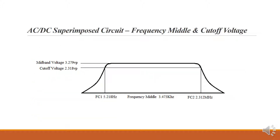Here's our calculated Bode plot. We can see FC1, our low cutoff frequency at 5.218 Hz; F middle at 3.473 kilohertz in the center of our mid band; and our high frequency cutoff FC2 at 2.312 megahertz. At mid band frequencies we have 3.279 volts peak, and at cutoff frequencies FC1 and FC2 we have 2.318 volts peak.